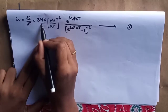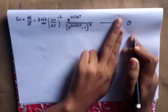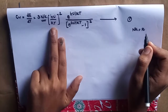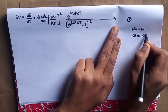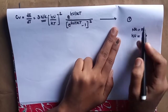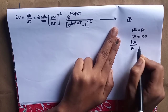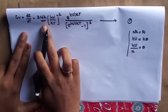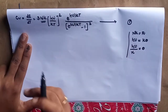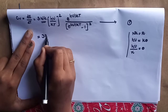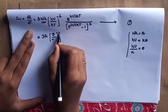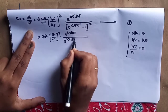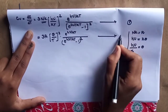What is nk divided by R? nk will be equal to R. Then h-mu divided by kT is equal to k-theta, and h-mu divided by k will be equal to theta. So we will change the equation: nk divided by R, and h-mu divided by k equals theta. The new equation becomes 3R into theta by T, whole squared, into e-power h-mu divided by kT, divided by e-power h-mu divided by kT minus 1, whole squared. This is equation number 2.